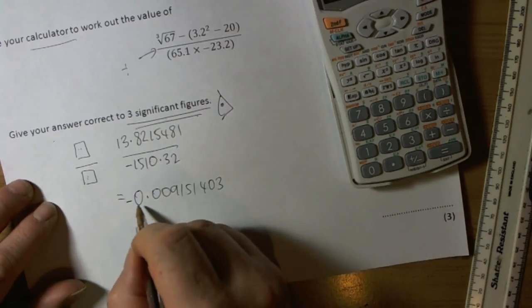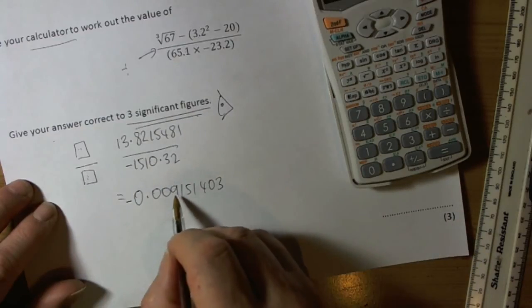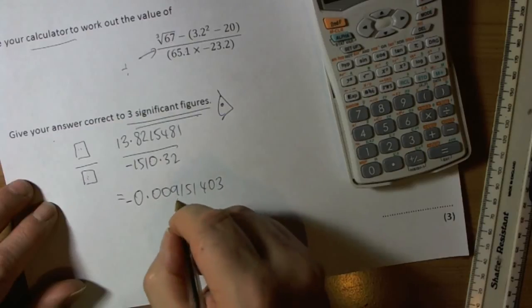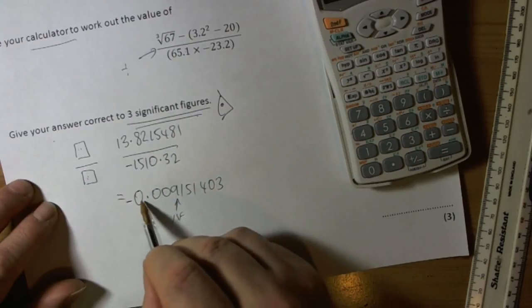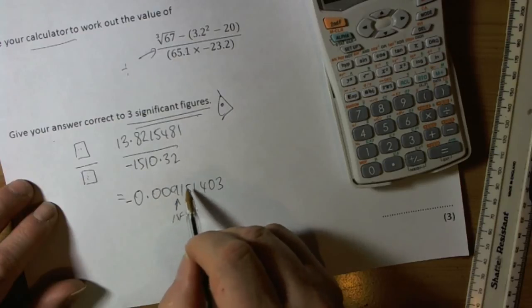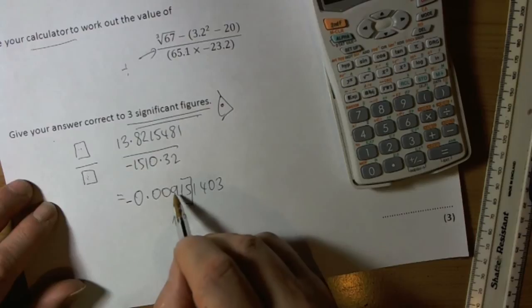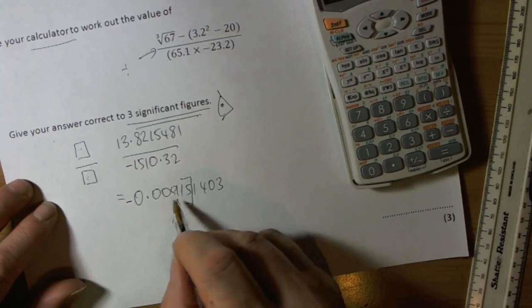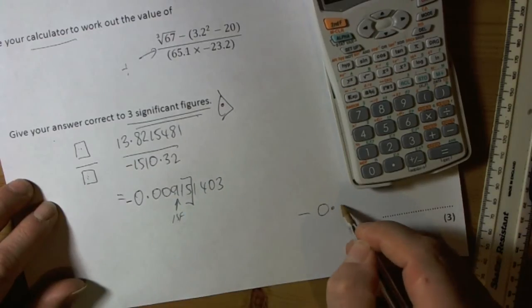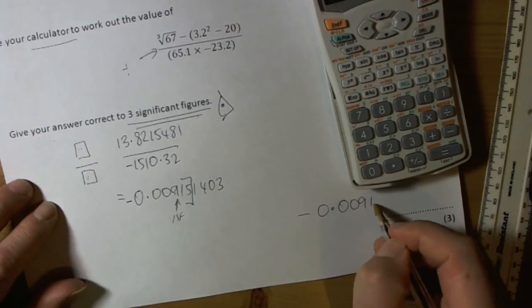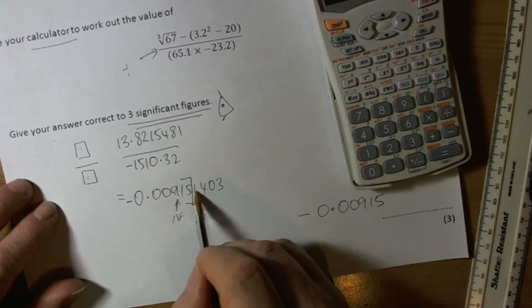So I then count my first non-zero digit. So there's my first non-zero digit, so that's going to be my first significant figure. So I'm going to go one, two, three, so I'm going to cut the number there. That'll give me three significant figures: one, two, three.